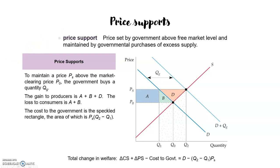Price supports are a type of regulation with the purpose to increase the prices of products such as tobacco and dairy products, so that the producers of those goods can receive higher incomes. One way for the government to do this is to set a support price — like PS — and then buy up whatever output is needed to keep the market price at that level.